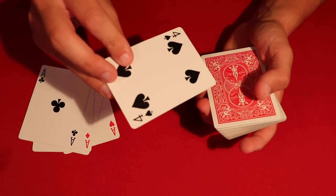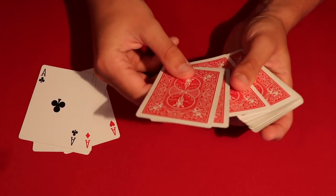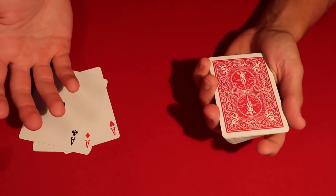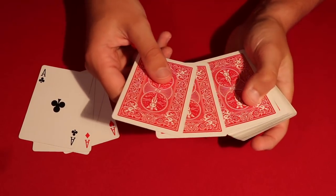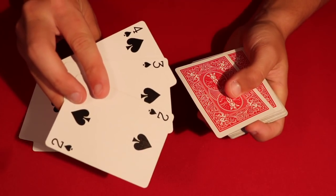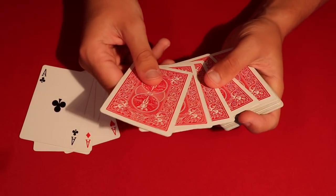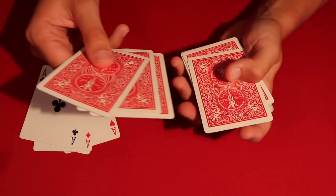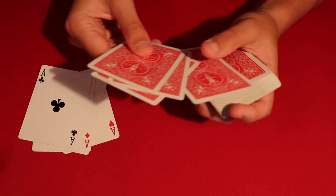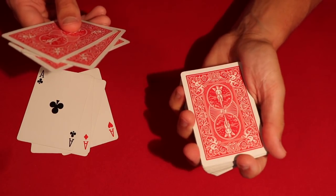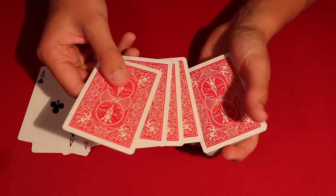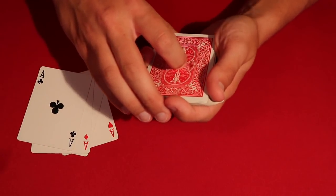Okay, so all you do, you take the two, three, and four from whatever suit you grabbed them from. And you put these on top of the deck. So you leave the four on top. So it goes four, three, and then two. And that's basically the only setup you're going to need. Now before you go up to the spectators, what you could do is get a pinky break underneath the top four cards.